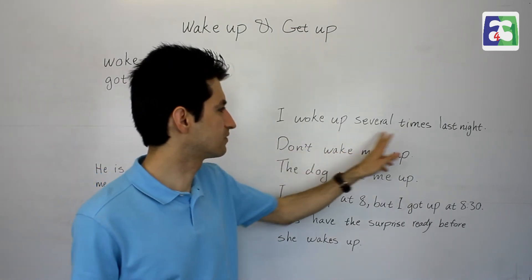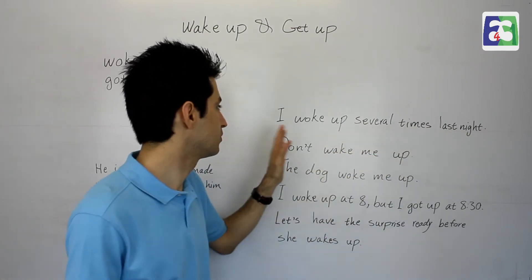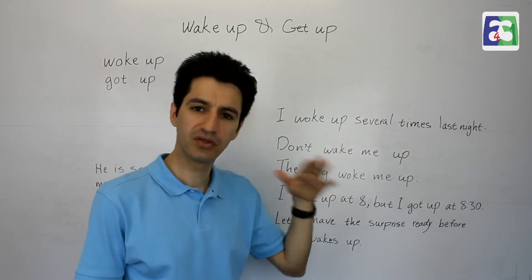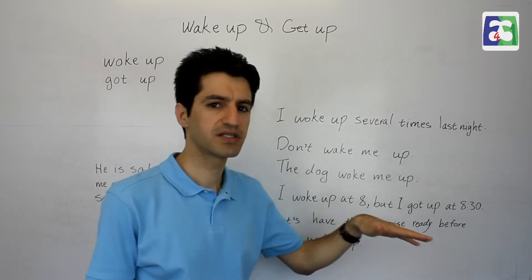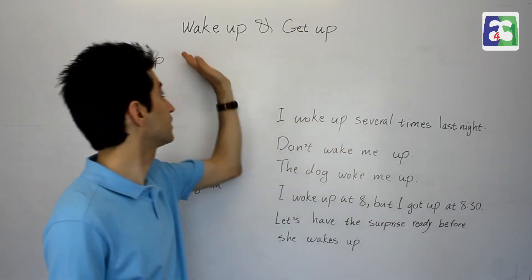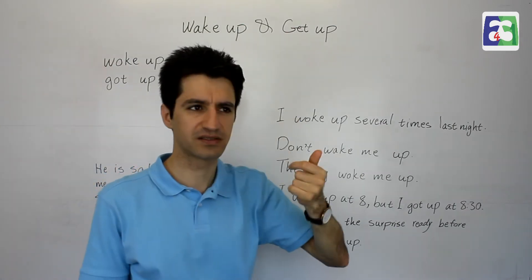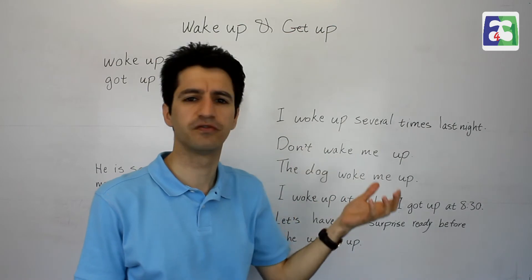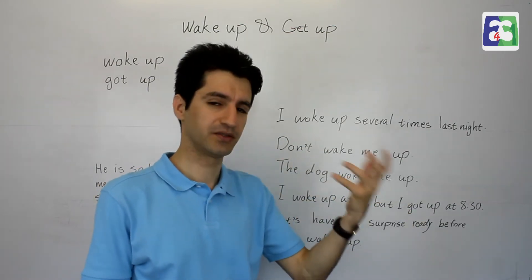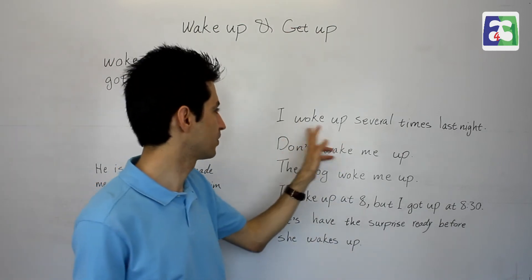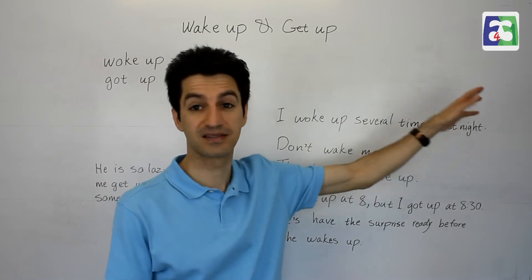Example: 'I woke up several times last night.' So you go to bed and you do not come out of bed — let's say for 6, 7, or 8 hours — but you wake up several times because something makes noise, maybe your phone goes off, and then you go to sleep again. That's why I used woke up — that's the past tense because I am talking about last night.